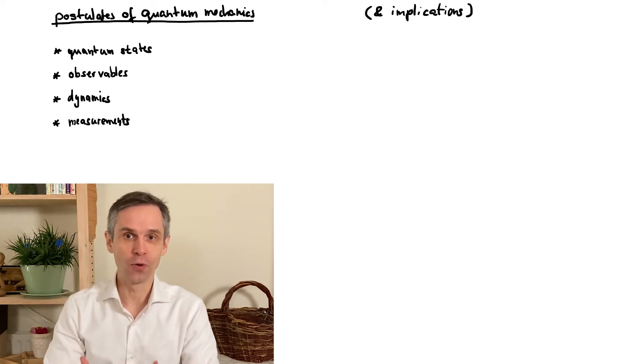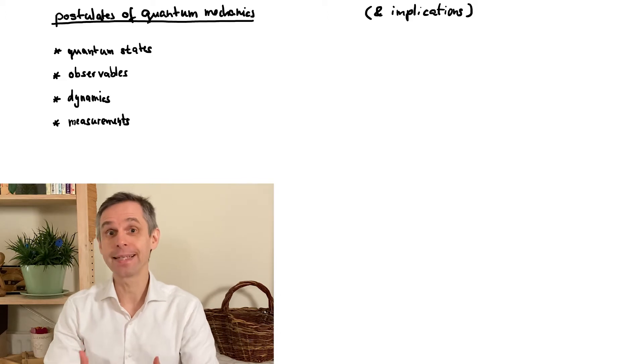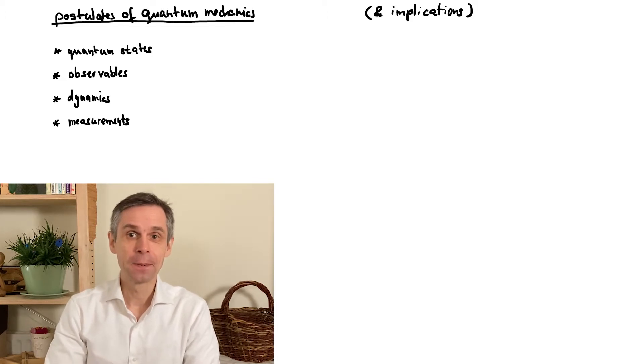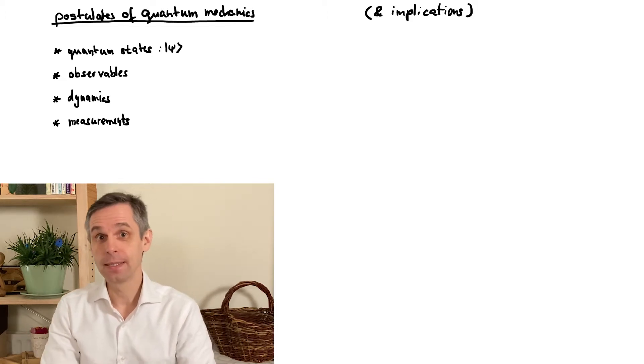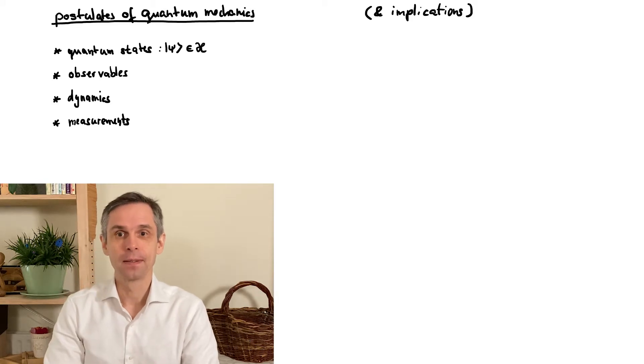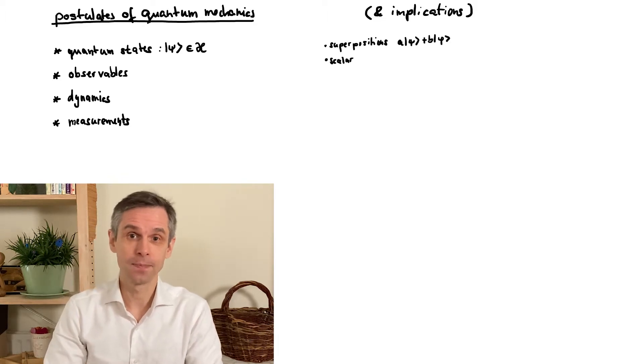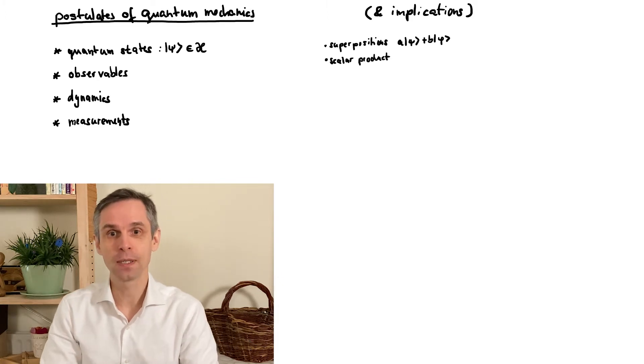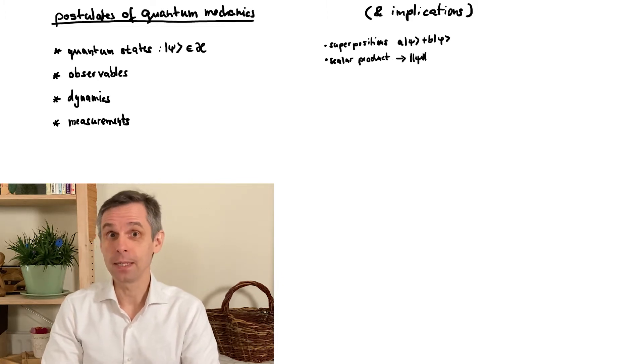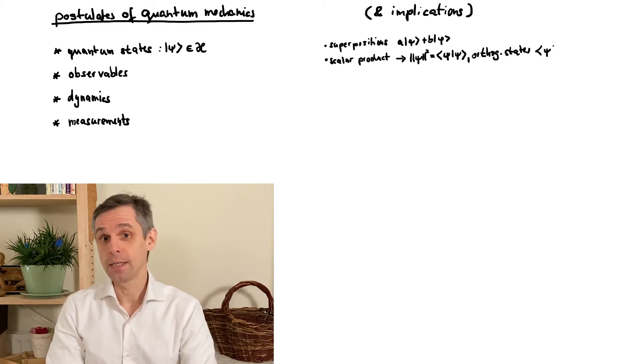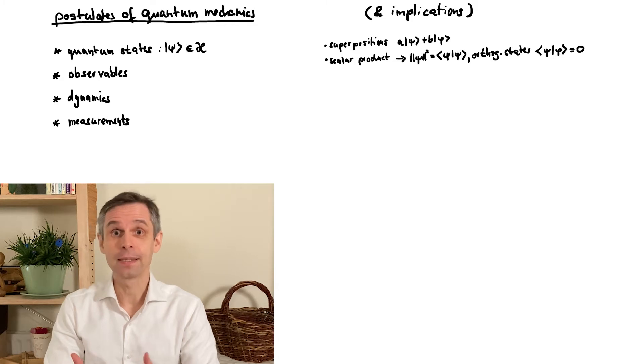So our first postulate concerns the possible states of the system. We say that these are vectors in a Hilbert space. This means that we can combine them linearly according to the superposition principle. And we have a scalar product to work out the length of a state, say for normalization, and compare any pair of states, in particular figure out if they are orthogonal.